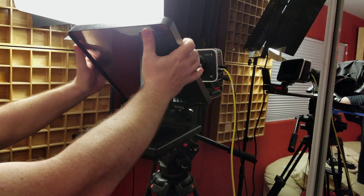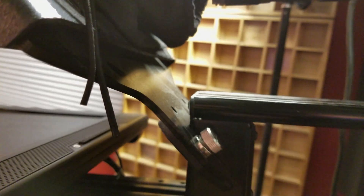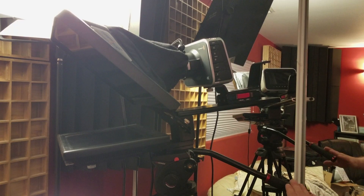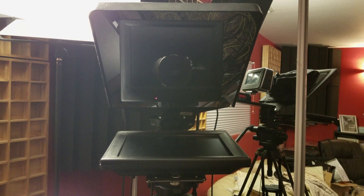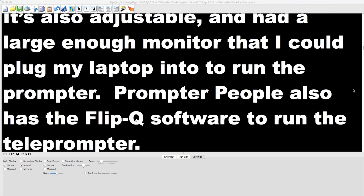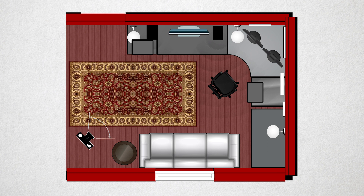Next was the teleprompter. Given the small size of the camera and the less than constant use, I chose a modest prompter, the Flexline from Prompter People — easy to set up and lightweight, so I didn't need a heavy-duty tripod. It's also adjustable and had a large enough monitor that I could plug my laptop into it and run the prompter. Prompter People has the FlipQ software to run the teleprompter. Prompter People also has a sister lighting company called Flowlight. The lights are very inexpensive, but not the most rugged. An A220 with some diffusion, situated directly behind the camera, lights my face just fine — though it's not as artistic as I'd like, as the room constraints somewhat limit my options.